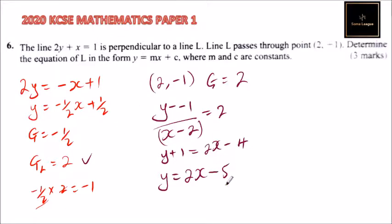This is the equation of line L in the form y = mx + c. The key here is to know the relationship between two perpendicular lines. The product of the gradients is always equal to -1.